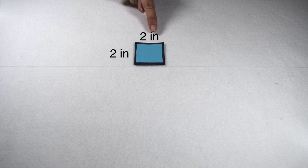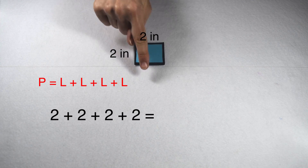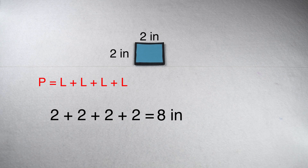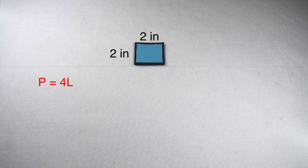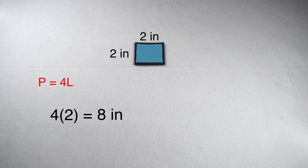Another shape that frequently has different ways to find the perimeter is a square. Instead of seeing a square written as the sum of all the edges, you can also see people finding the perimeter by doing 4 times the side length. This is because on a square, all the edges are the same. This square has edges that are worth 2 inches each. So if I add them up, 2 plus 2 plus 2 plus 2 would give me a total of 8 inches. If I did 4 times the side length, that would mean I multiply 4 times 2, which also gives me a perimeter of 8 inches, because multiplication is another way to do repeated addition.